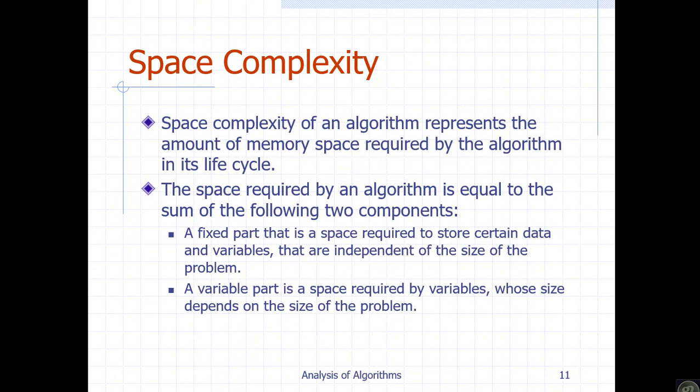Space complexity involves measuring variable parts. The variable depends on the input size, and the input size is considered as a key factor. The algorithm involves code, a program, and variables that can differ. Space complexity is calculated based on the variables used by the algorithm — including fixed parts and variable parts depending on the input.